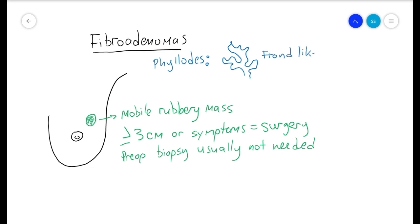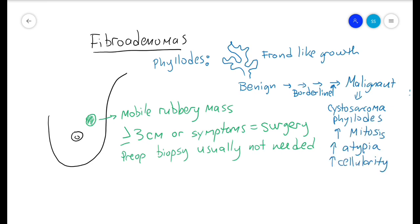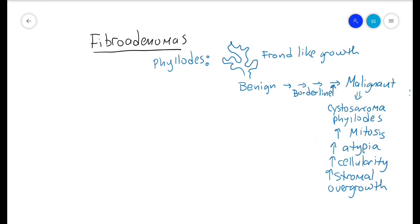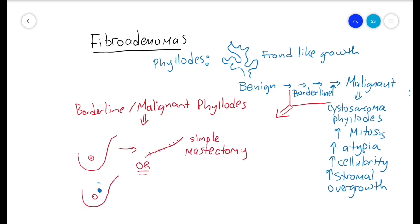Phyllodes are defined by having leafy frond-like growth on microscopy, and they are on the spectrum between benign to borderline to malignant. The malignant variety is also called a cystosarcoma phyllodes. These have more mitoses, more cellular atypia, and more cellularity and stromal overgrowth. A borderline or malignant phyllodes should probably have a simple mastectomy done. If you find a smaller malignant phyllodes in a very large breast, you can consider wide excision with one to two centimeter margins. But the malignant ones tend to present as large, rapidly growing masses, so this is a relatively rare situation.